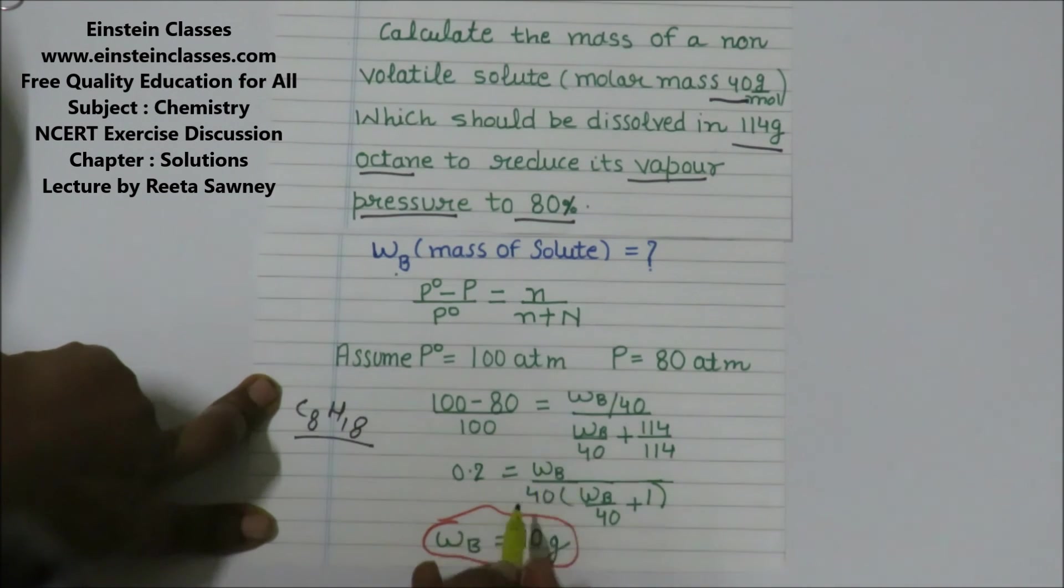And by simplifying, we can find out the value of WB. So mass of solute is 10 grams.